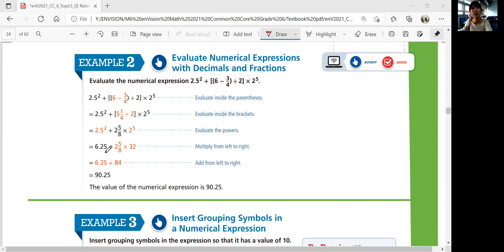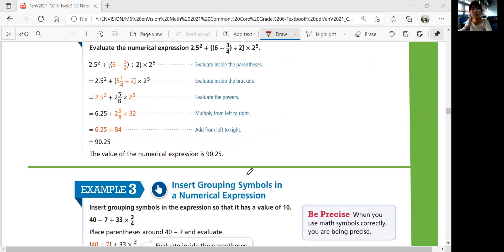And then solve the powers. You have 6.25 squared, which is... And then you add from left to right. You get 90.25.